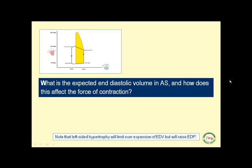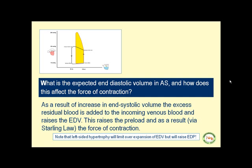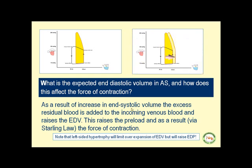The excess residual blood is added to the incoming venous blood and raises end-diastolic volume, increasing the preload. As a result, via Starling's law, the force of contraction increases. Over time, you expect the pressure-volume loop to shift to the right. However, an opposing force — left ventricular hypertrophy — limits the overexpansion of end-diastolic volume while raising end-systolic pressure, causing the base of the PV loop for aortic stenosis to shift upward as well.